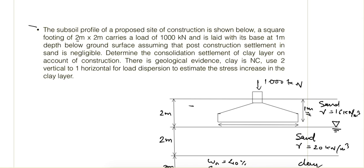The footing dimensions are 2 meter by 2 meter, placed 1 meter below ground. To determine the consolidation settlement of the clay layer, there is geological evidence that the clay is normally consolidated. Use two vertical to one horizontal load dispersion to estimate the stress increase.